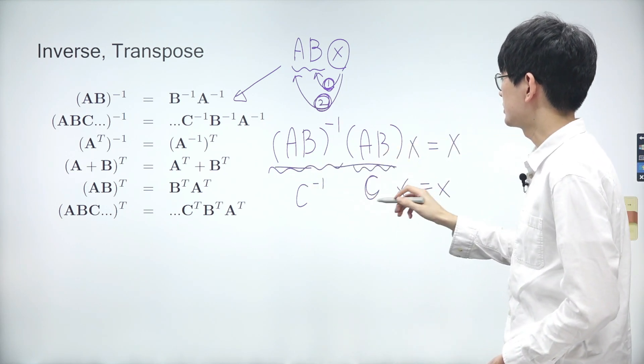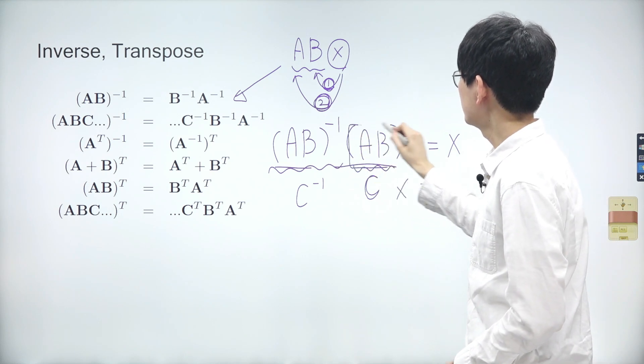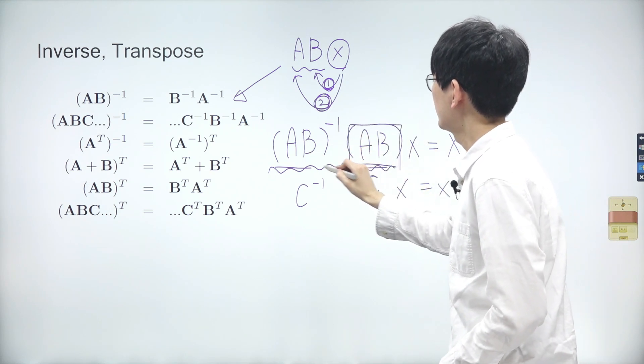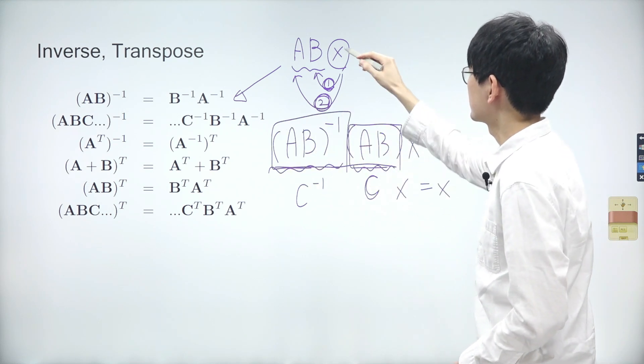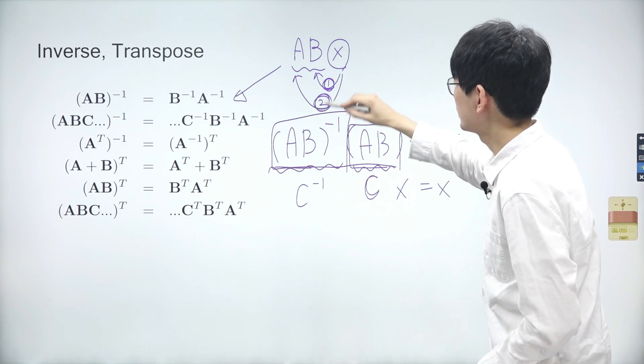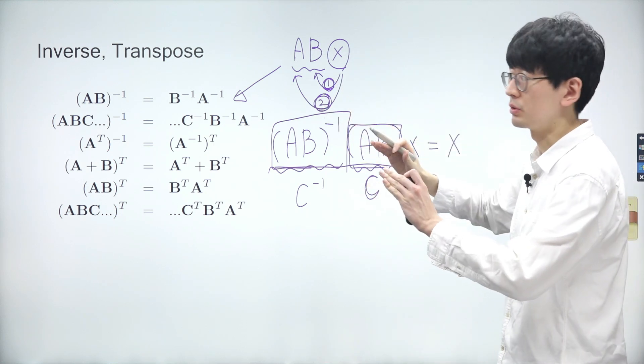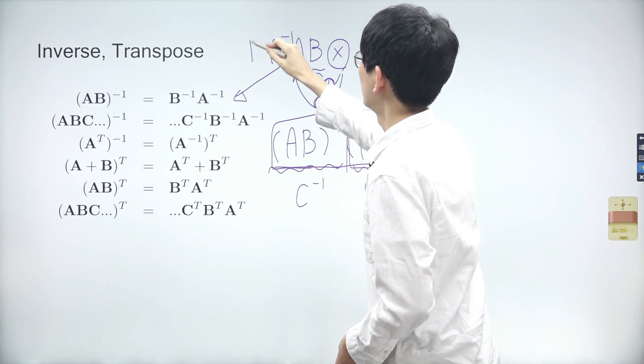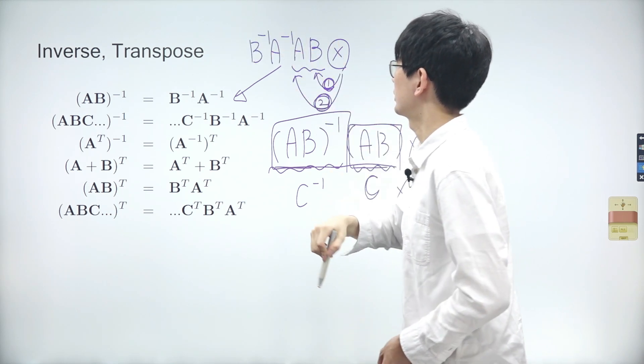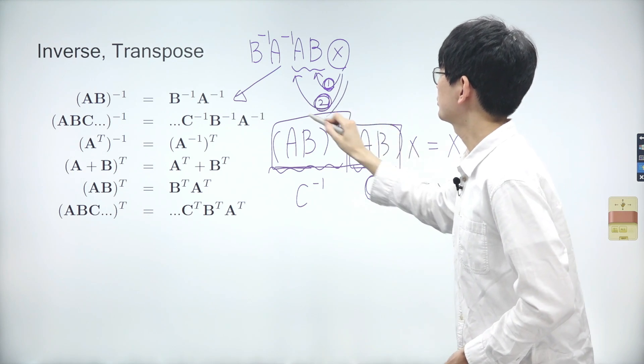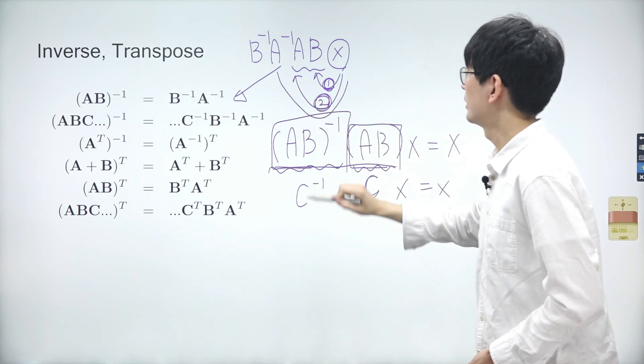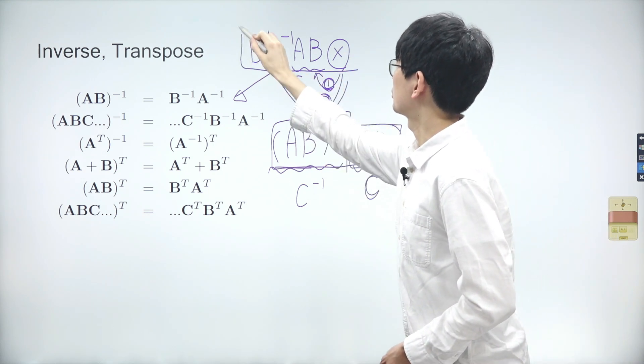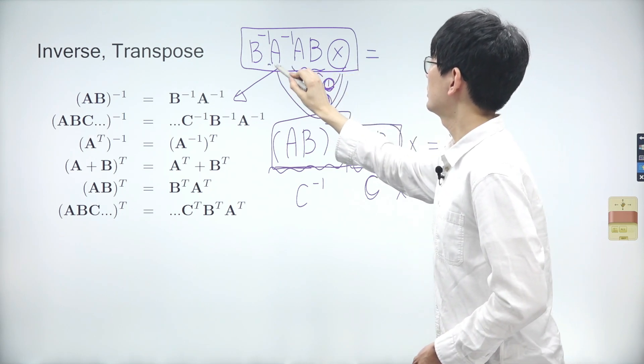C inverse reverses the transformation by C. To reverse the transformation by C, where C represents the products of A and B, we consider how X was initially transformed, first by B, and then by A. To reverse this process, we multiply by A inverse first, and then B inverse. Thus, the order is opposite compared to AB.